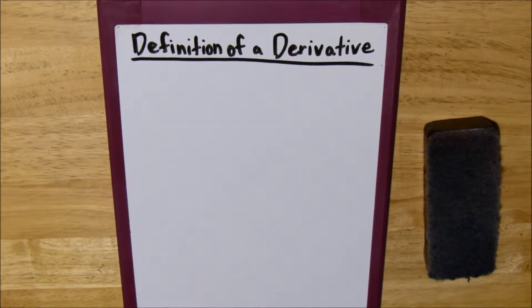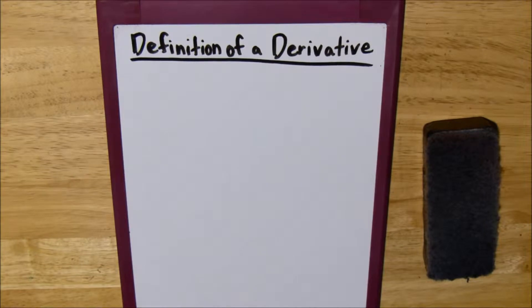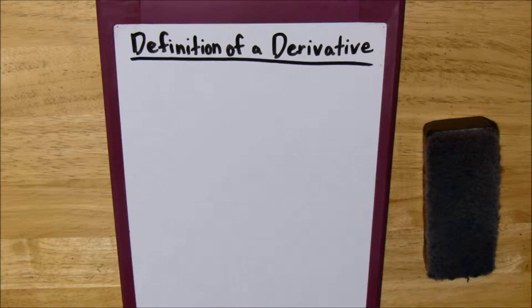Alright, so now let's talk about the definition of a derivative. The definition of a derivative is basically just finding the slope of the tangent line at any point, right?